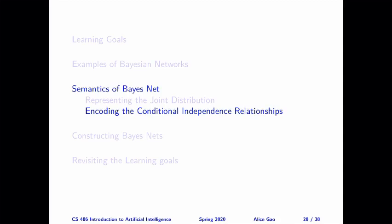Hello, everyone. This is Alice Gao. In this video, I'm going to discuss conditional independence and unconditional independence relationships in a Bayesian network. In the previous video, I talked about two ways of understanding a Bayesian network. First, a Bayesian network represents the joint probability distribution — we have enough information to recover the entire joint distribution. Second, a Bayesian network encodes a lot of unconditional and conditional independence relationships among the variables.